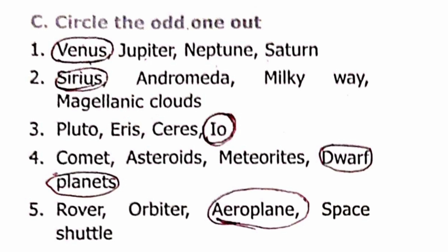Question 3: Options are Comet, Asteroids, Meteorites, and Dwarf planets. The odd one is Dwarf planets, as the others belong to the same category of small solar system bodies.